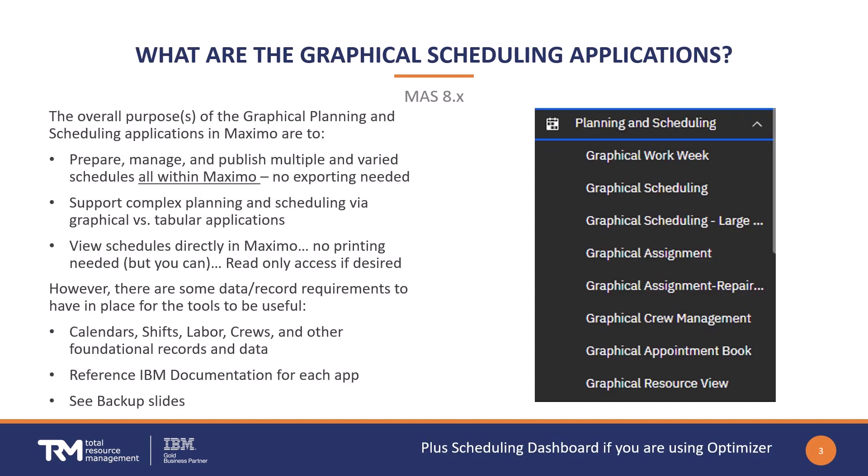If you're not familiar with the graphical scheduling applications in Maximo or Manage, their overall purpose is to prepare, manage, and publish multiple and varied schedules all within the product. You don't have to export your list of work orders out to an external tool anymore. They're also built to really support complex planning and scheduling by way of these graphical apps rather than tabular applications like we've done in the past. The whole point is to view schedules directly in Maximo — you don't need to print out lists of records anymore, although you can still print. You can also have people with read-only access if you'd like.